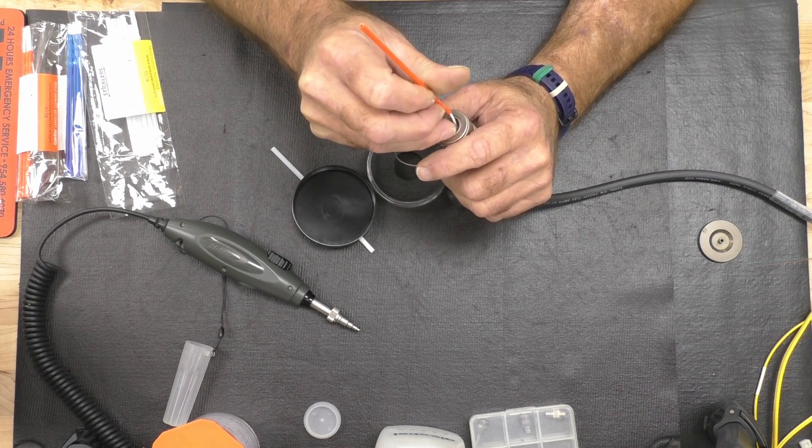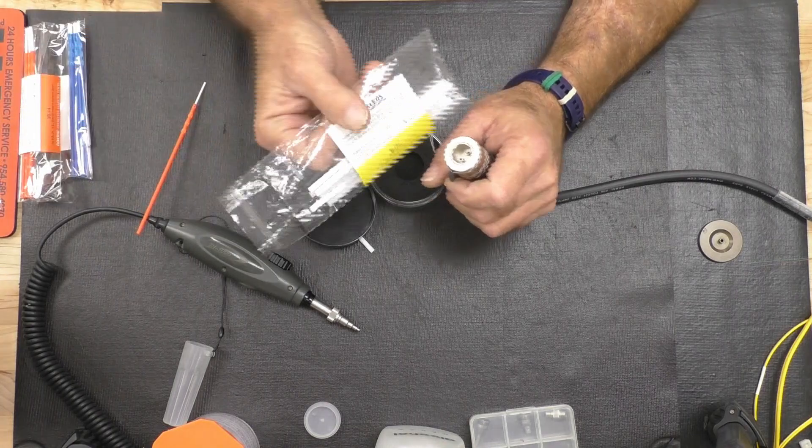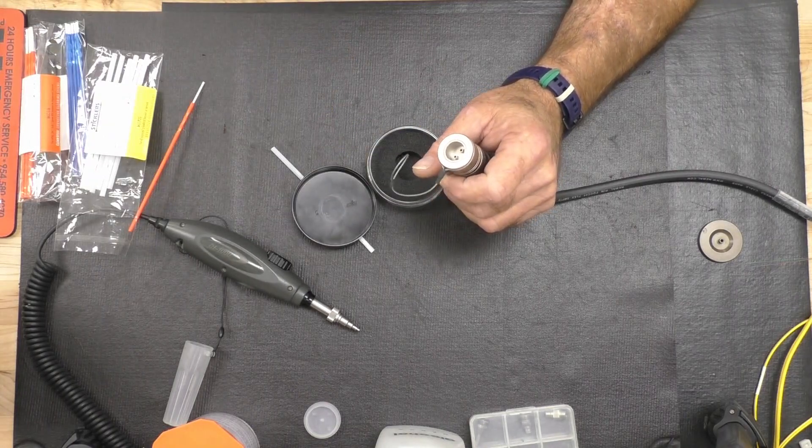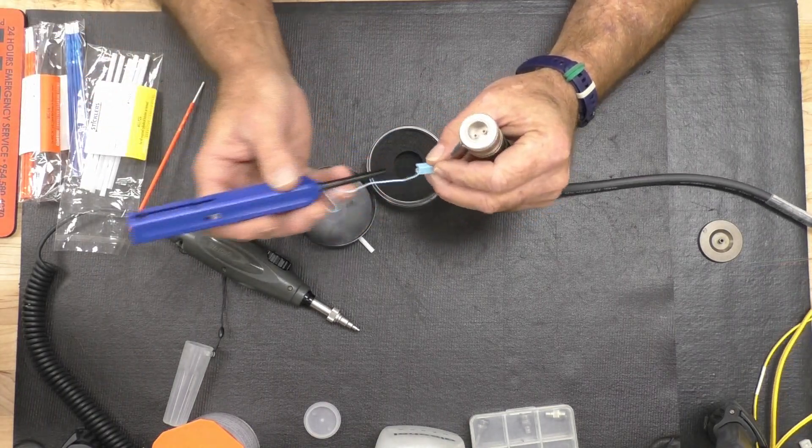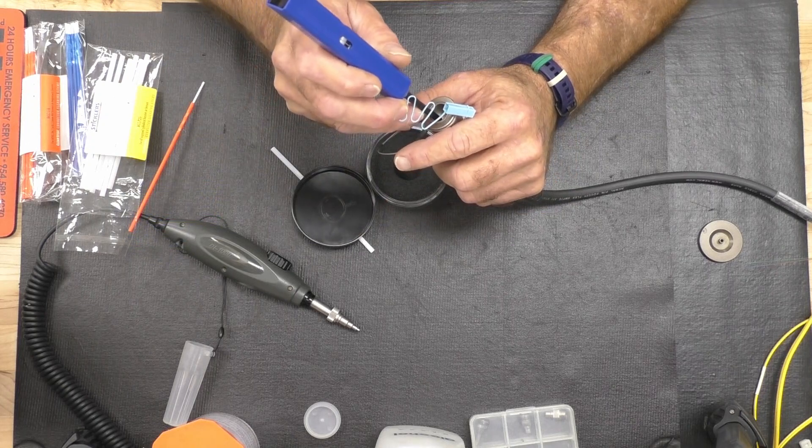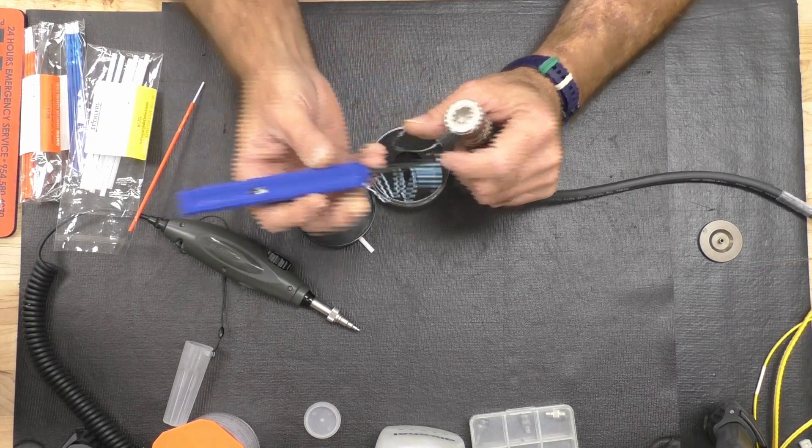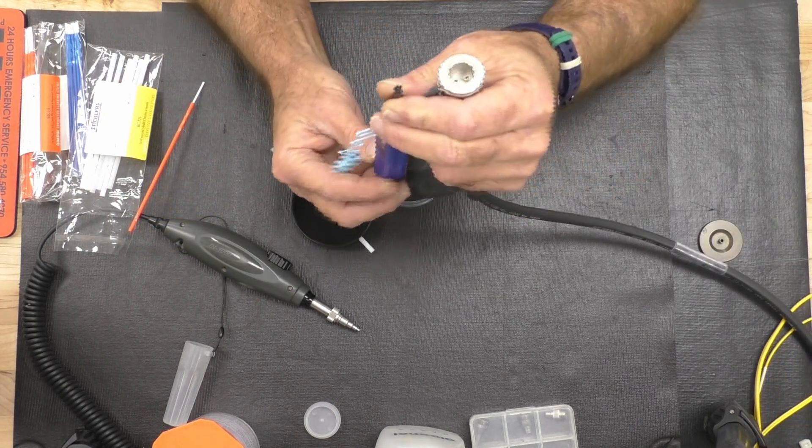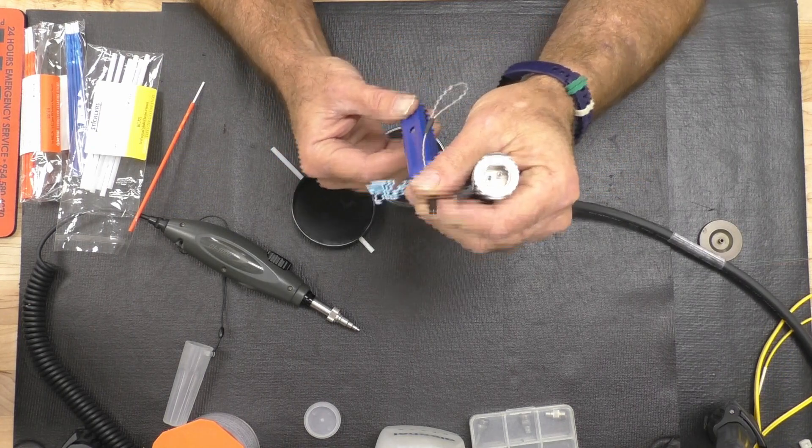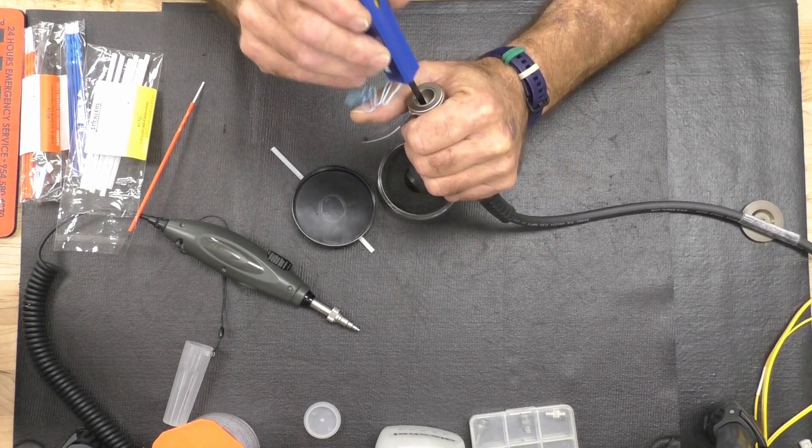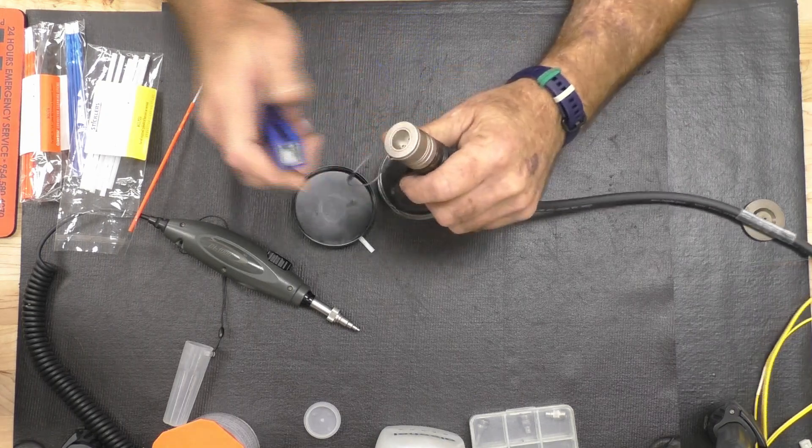These particular tools are packaged by Stickler. The other option is to use a string cleaner. It reaches down inside and snaps. Basically, it's string, much like dental floss, being centered and snapped across the surface of the contact.